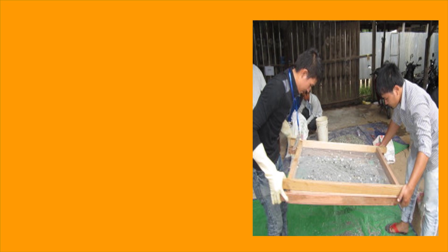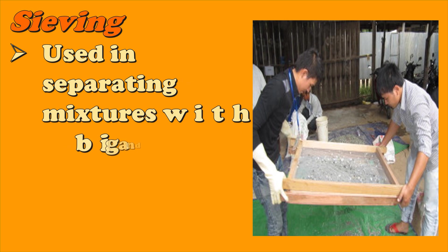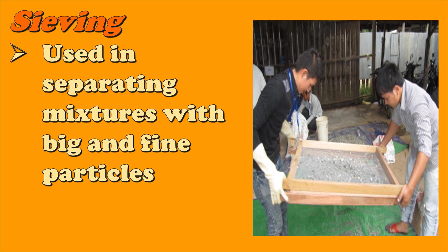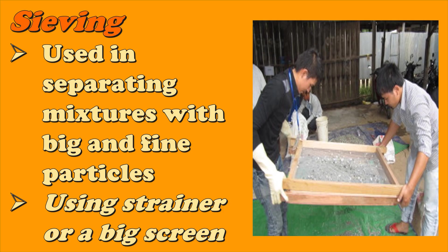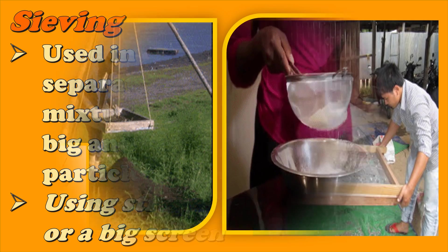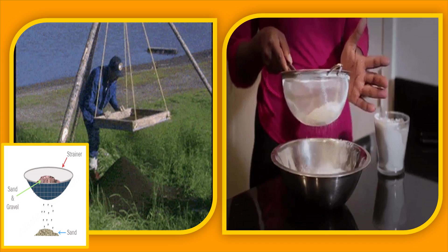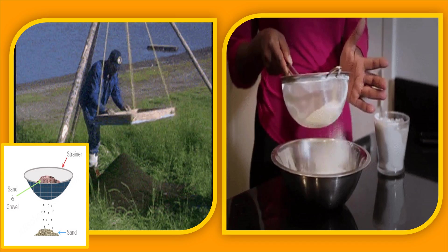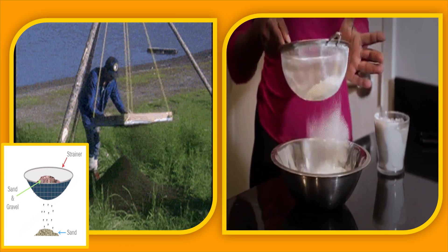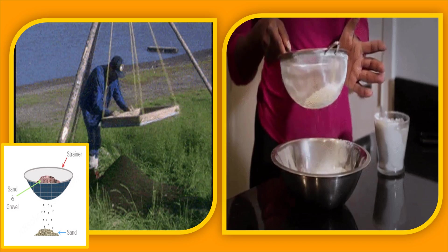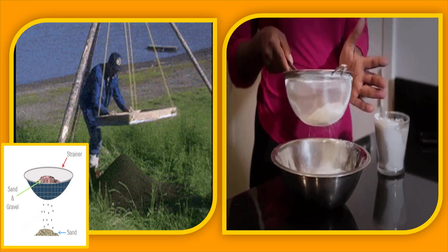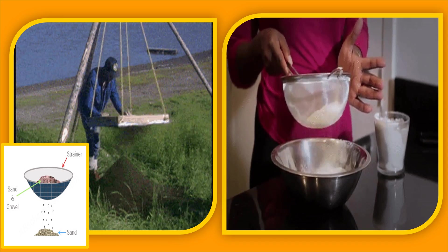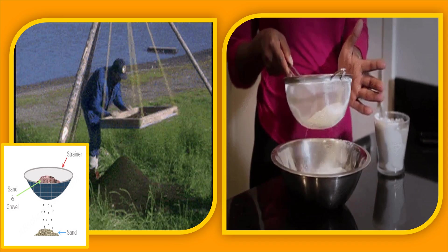Another way of separating mixtures is known as sieving or sifting. It is a method used in separating mixtures with big and fine particles using a strainer or a big screen. Here are some examples: separating sand from gravel through sifting. The strainer allows only the fine particles through it and prevents the larger ones. The sieving technique is used in separating fine sand from rocks in a mixture of gravel and sand.